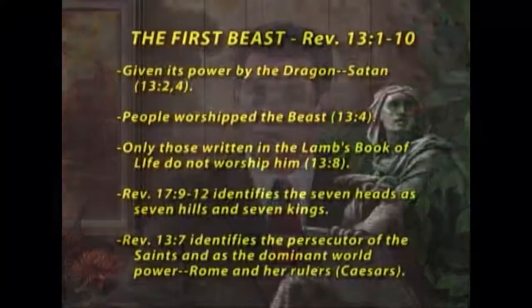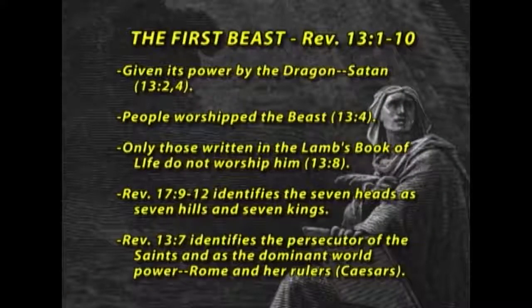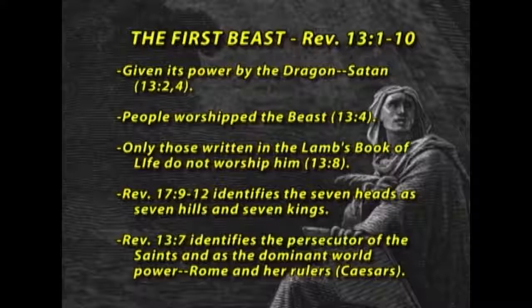In Revelation 13, verse 7, another characteristic is given: whoever this sea beast is, it is identified as a persecutor of the saints and a dominant world power. Who persecuted Christians? Rome did. Who was the dominant world power during this time? Rome and her rulers, the Caesars. Let's be clear: the text of Revelation 13 gives us the information to know this is Rome. When I see the sea beast under the control of the dragon, I know that's Rome and her rulers.